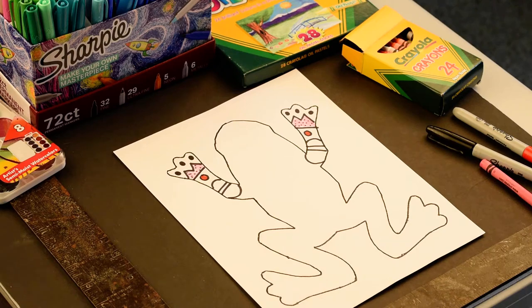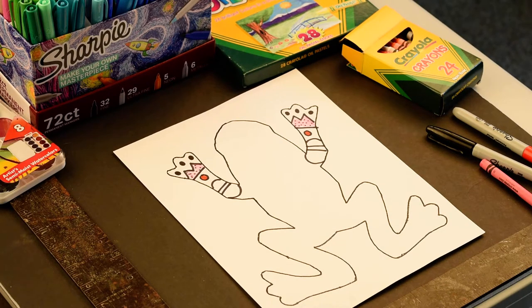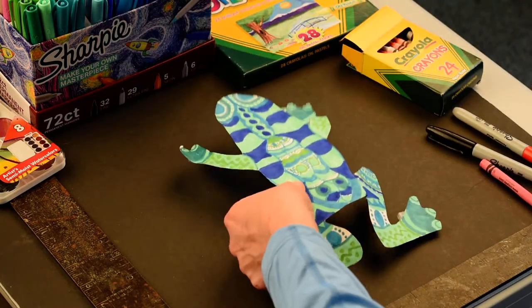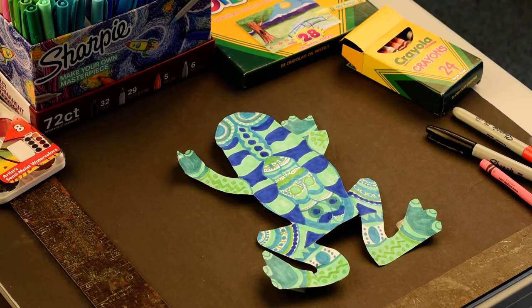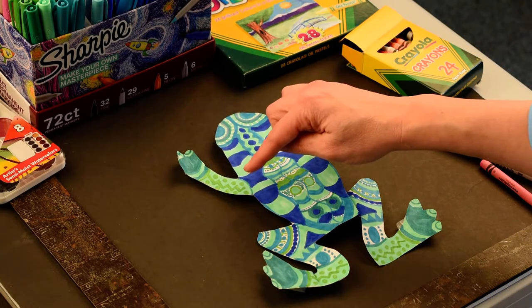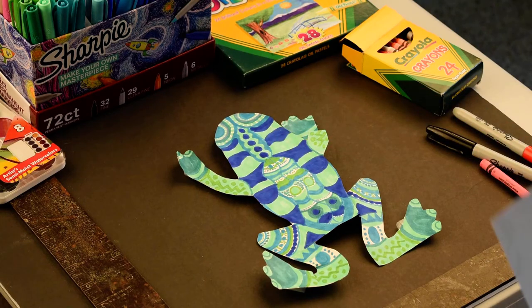So let's fast forward and pretend that we are done and our frog looks something like this. So we have our frog and then of course the next step would be to cut it out like so.